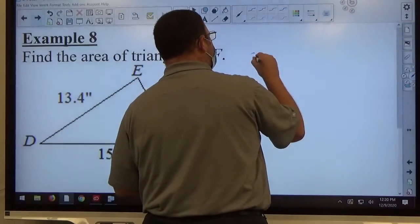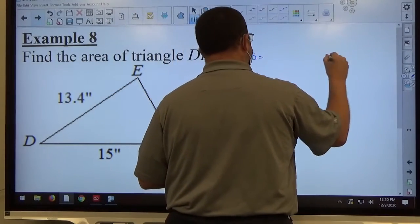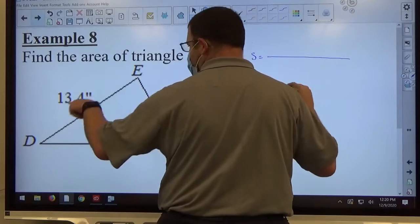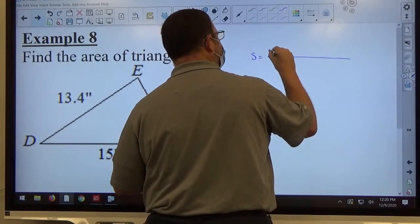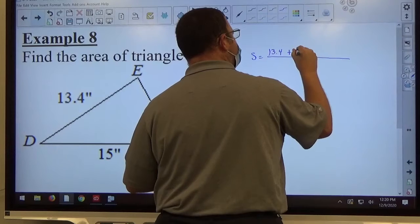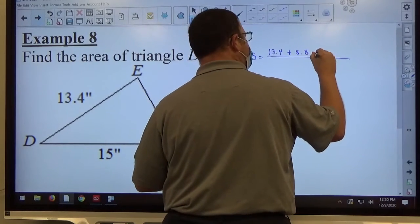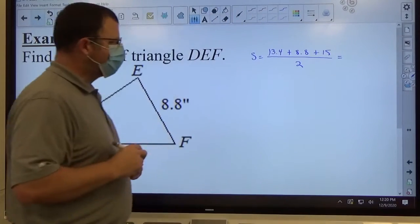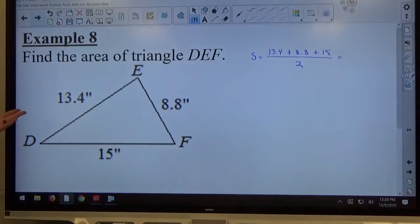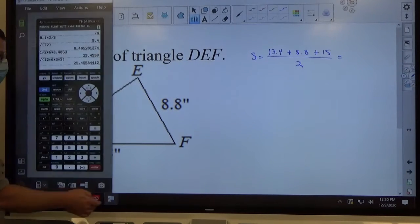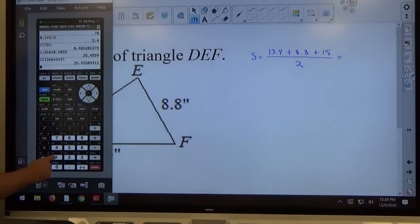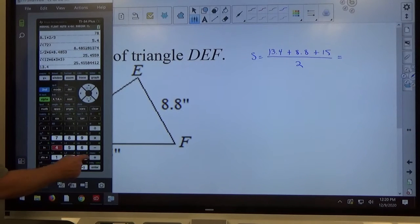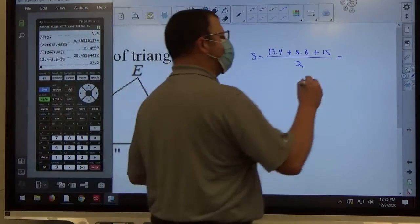So if I start off with my semi-perimeter on this one, the semi-perimeter is equal to the sum of the three sides, so it's 13.4 plus 8.8 plus 15, all divided by 2. Either you can calculate in your head or not. If you can, fine. If not, you use a calculator. So let's just grab a calculator. 13.4 plus 8.8 plus 15 equals, that's 37.2 over 2.